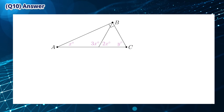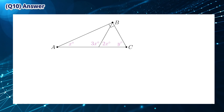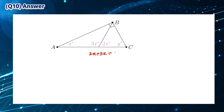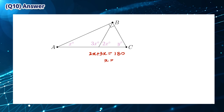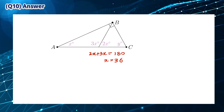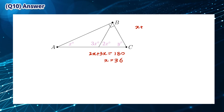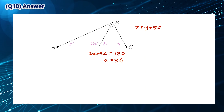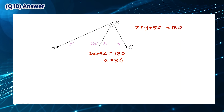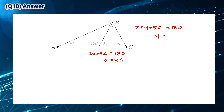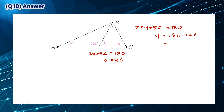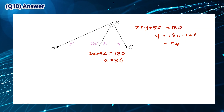The angles marked 3x and 2x are supplementary, so 3x plus 2x is equal to 180 degrees, which means that x is equal to 36. From triangle ABC, we know that x plus y plus 90 is equal to 180 degrees. Substituting x equals 36, we find that y is equal to 180 minus 126, which is equal to 54. This means that the answer is C.